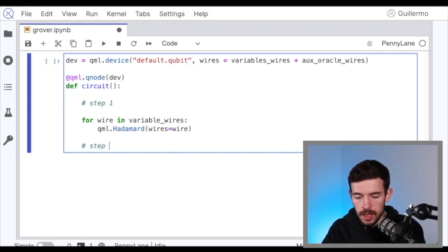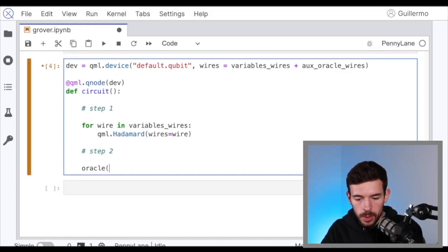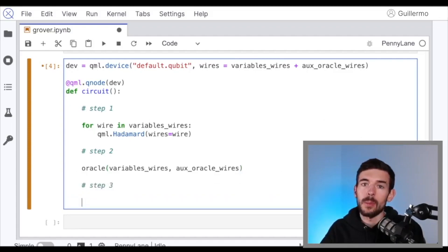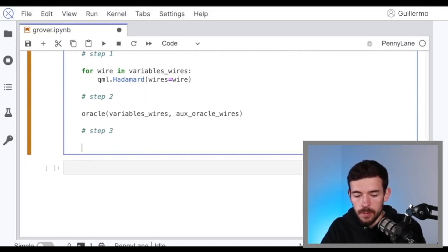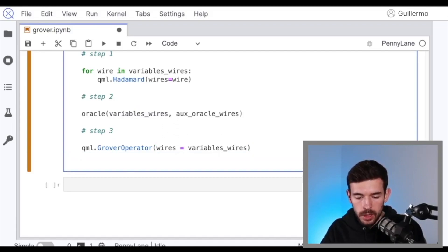So after that, we have to apply the second step, that is use the oracle to mark these elements that are correct solutions. So we just call the oracle function. In particular, we need to pass the wires of the oracle. And in that case, they're going to be the variable ones and the auxiliary ones. And finally, we need to apply the Grover operator. That is something that we already have in PennyLane. So we just call the Grover operator gate. We pass the wires, we want to amplify the values that are only in these variable wires.